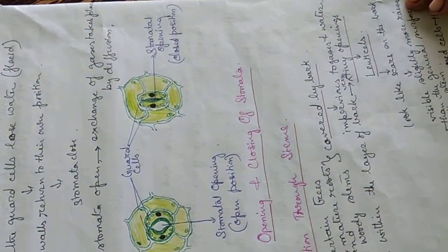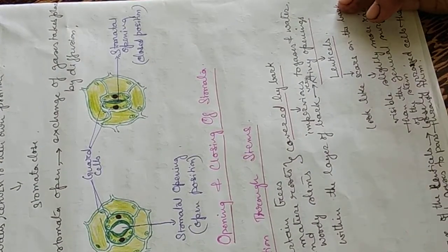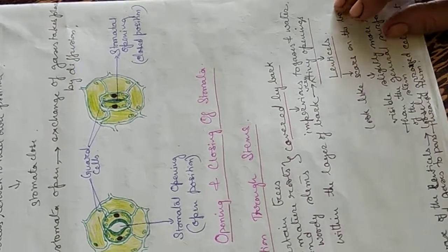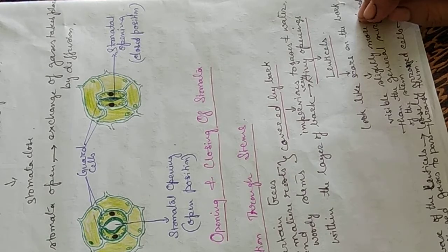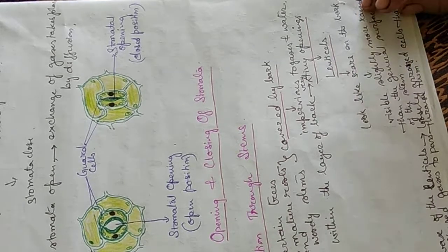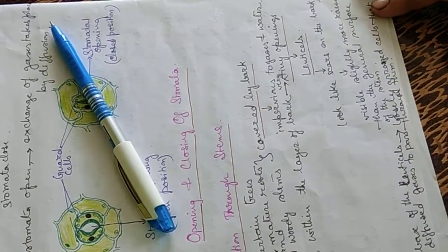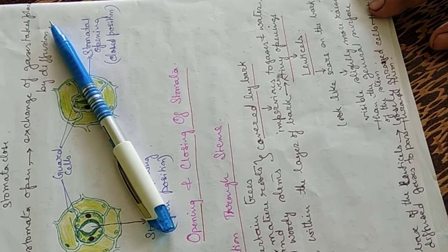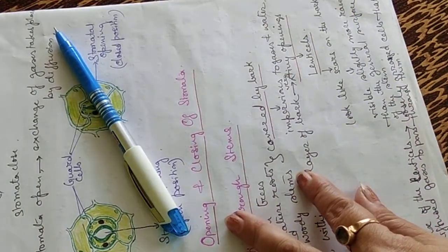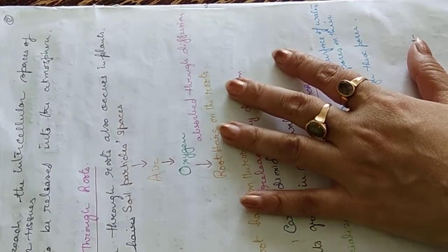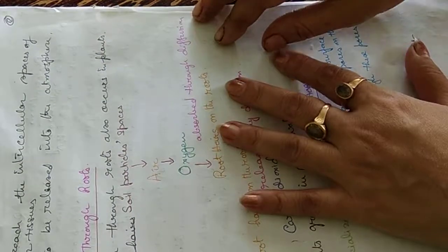Respiration through stems: in certain trees with old, mature, and hard woody stems, they are covered with bark which is impervious to gases and water. Within the layers of bark there are tiny openings called lenticels — they look like scars on the bark, slightly more raised than the general surface of the stem. At the base of lenticels there are loosely arranged cells which allow diffusion of gases, so oxygen reaches the intercellular spaces of inner tissues and carbon dioxide is released into the atmosphere.